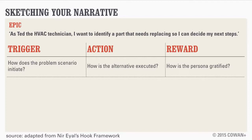That trigger could be an external thing, like the software tells them to do it, or it could be an internal thing like wanting to check something. Then the action happens — what is the user actually doing? This is where we're trying to do a good job on the X axis of our fog curve, making the most usable possible experience for the user and minimizing that action.